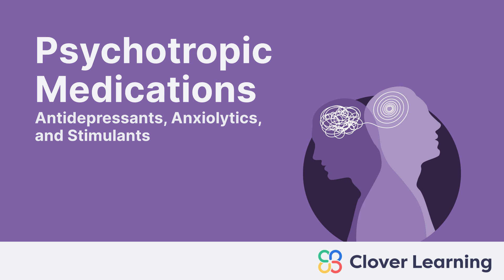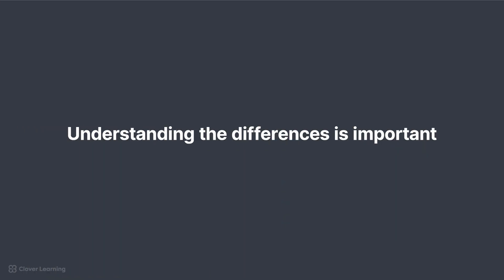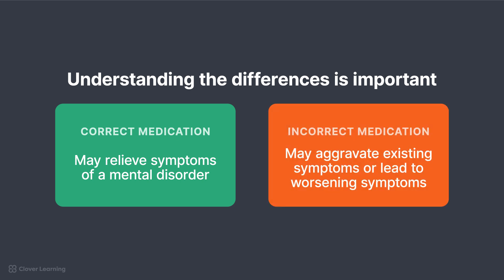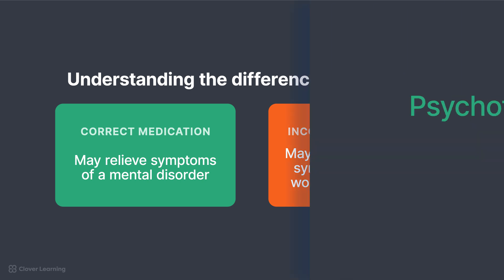Welcome back, everybody, to our discussion of the different classes of medication. This lesson focuses on common types of psychotropic medications, their use and administration, and precautions specific to this class of medication. Understanding the differences between psychotropic medications is important because the correct medication may relieve symptoms of a mental disorder, while the incorrect medication may aggravate or lead to worsening symptoms.